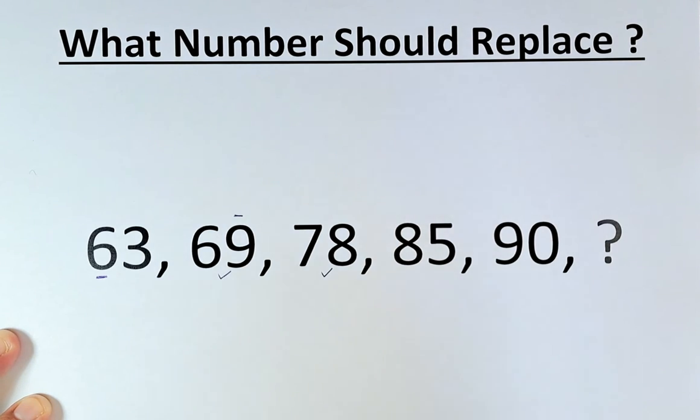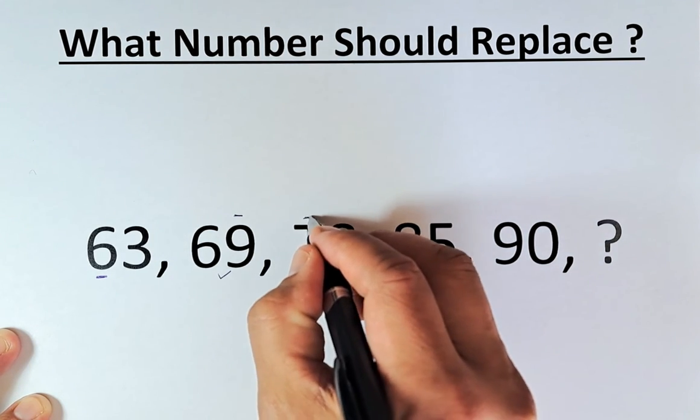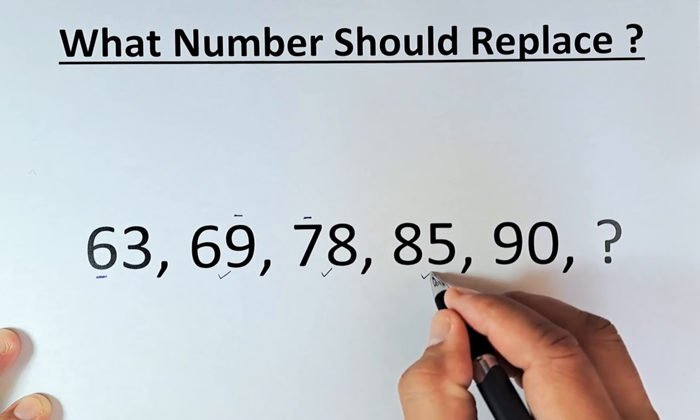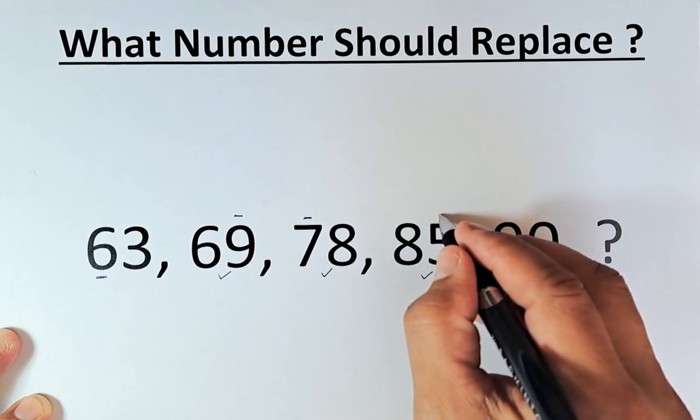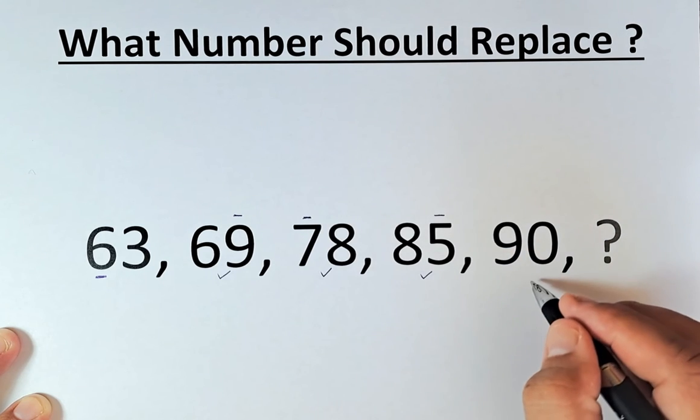And the trend continues. So first number, then second number, and then now we're going to add the first number. So 78 plus 7, the first number, gives us 85. And then from 85 to 90, we're going to add the second number. So 85 plus 5, that gives us 90.